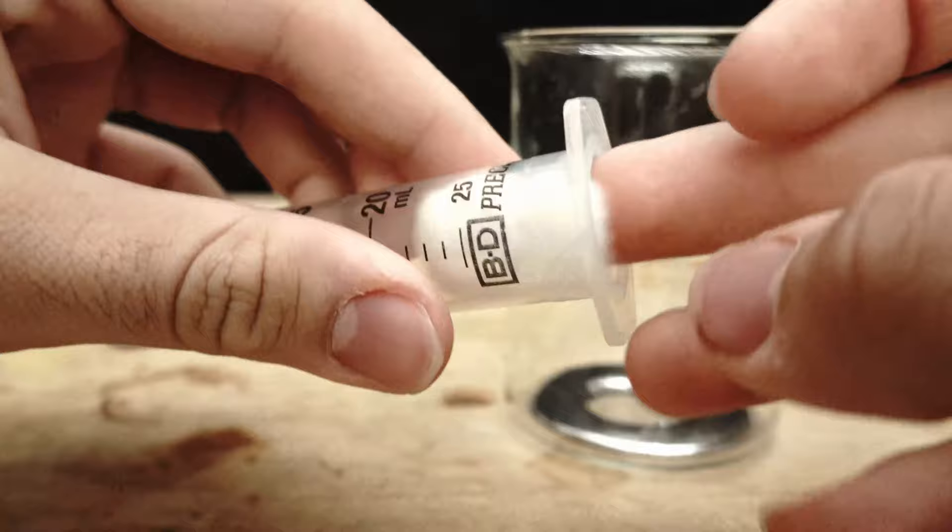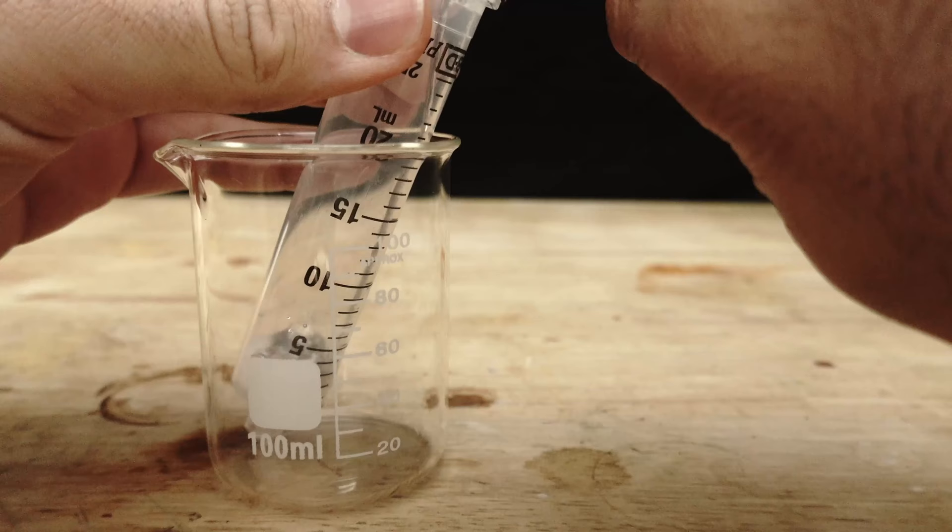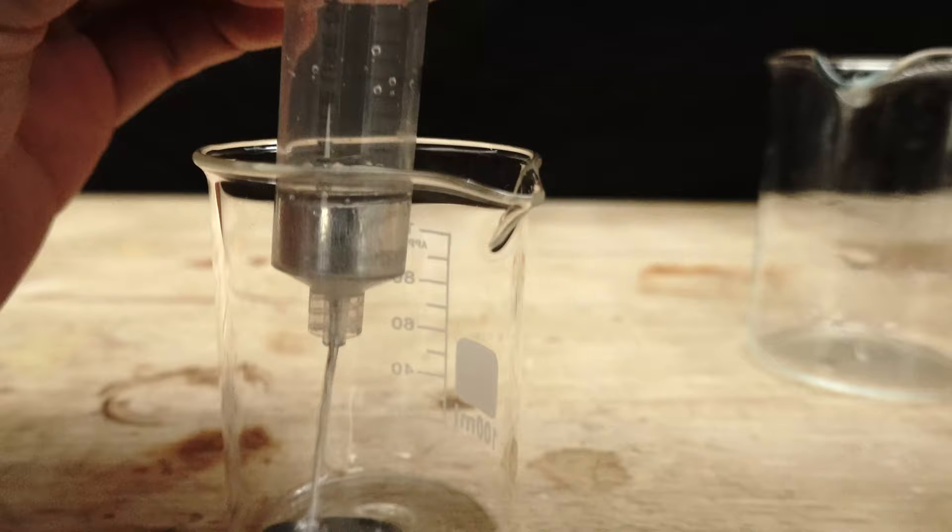Now the final step to our purification process is to force the mercury through a syringe. Not just any syringe though, in this syringe we shove a cotton ball to act as both a towel and a filter. By pouring the mercury into our makeshift filter and pressing down on the plunger, all large impurities are left behind and all the water is sapped away by the cotton. The definition of two birds with one stone.